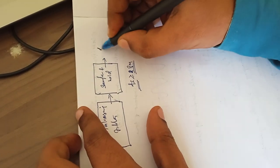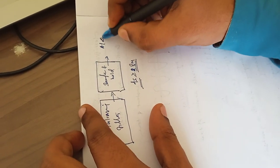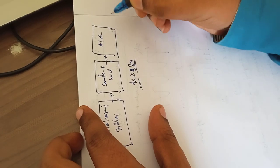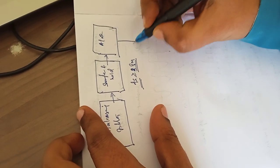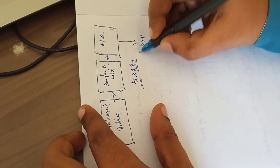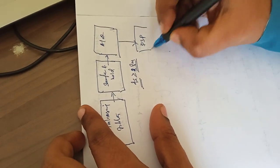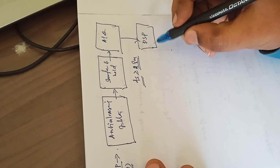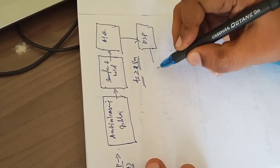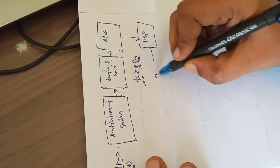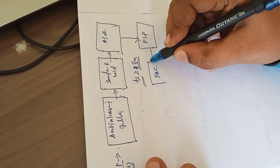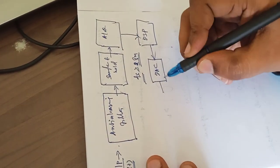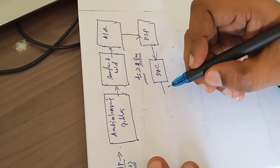After sample and hold, we need to convert analog to digital using an analog-to-digital converter. After converting, we give the signal to the DSP processor, which performs digital signal processing. After processing, we convert digital back to analog using a digital-to-analog converter. After that, if there is any noise remaining...